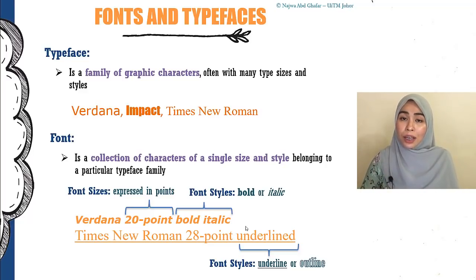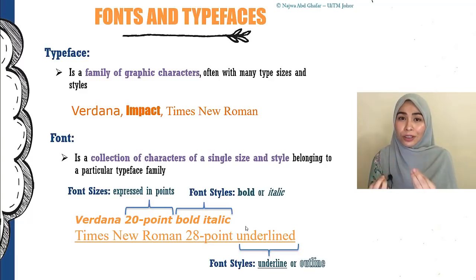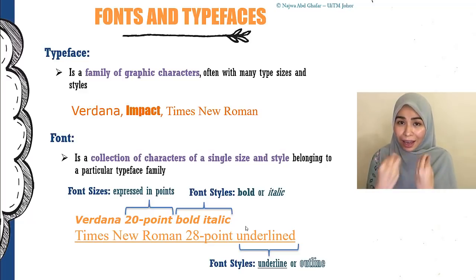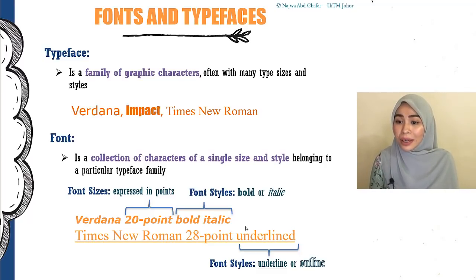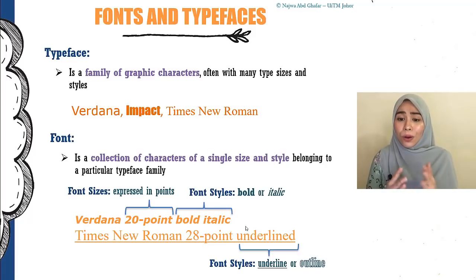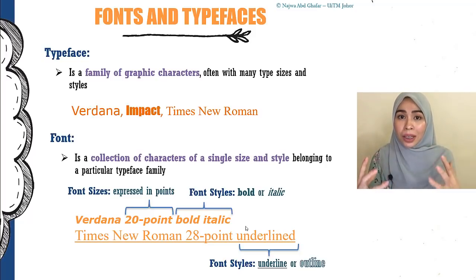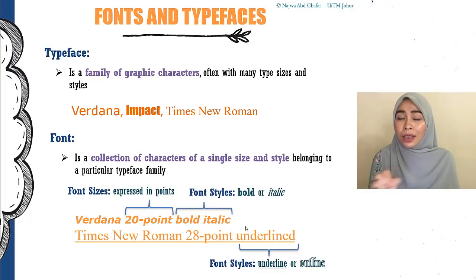If I show you the words 'typeface' and 'font,' you would be more familiar with font. Actually, when we say Times New Roman, Arial, or Comic Sans — those are actually called typefaces. A typeface is a family of graphic characters, often with many type sizes and styles. For example, Verdana, Impact, Times New Roman, Comic Sans — those are typefaces. It is a family, meaning that inside that typeface there are many characters, and how each character is graphically drawn represents that typeface.